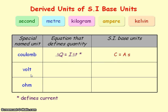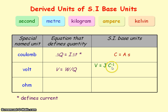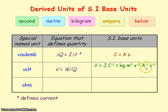The volt is the unit for voltage or potential difference, and voltage equals work done divided by the charge flowing. So the volt equals the units of work done — joules — divided by the units of charge — coulombs — giving joules per coulomb. To get the volt into SI base units, we substitute the joule and the coulomb, giving kg meters squared per ampere per second cubed.